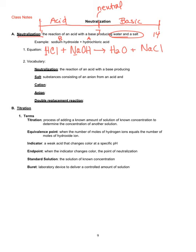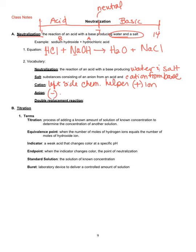So down in the vocabulary after number 2, the neutralization is the reaction of an acid with a base, and you will produce water and a salt. The salt is the substance consisting of the anion from an acid and the cation from the base. Remember, cations are found on the left side of your chem helper. And they are a positive ion. Anions are negative ions, and those are on the right side of the chem helper on that front page.